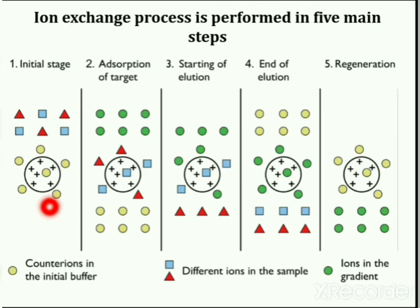In the first step, the column is filled with ion exchanger. Then the sample is poured into the column followed by the buffer. The tris buffer, pyridine buffer, acetate buffer, citrate, and phosphate buffers are the most commonly used buffers.